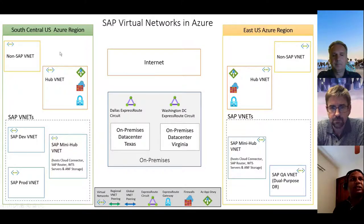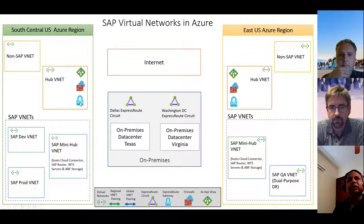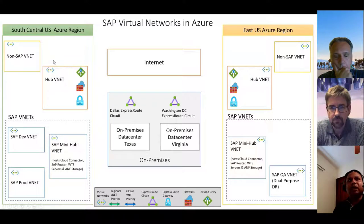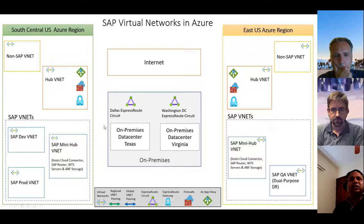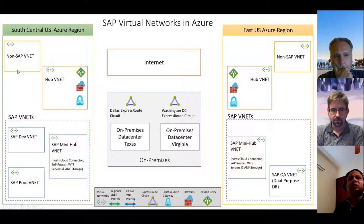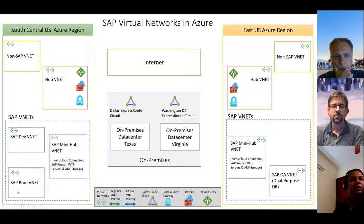Likewise, any east-west traffic within the region or cross-region also goes through the Palo Alto firewall. The ExpressRoute gateway links the customer's ExpressRoute circuits to ensure connectivity from the Azure regions into on-premises data centers. Beyond the hub VNet, there are non-SAP spoke VNets hosting non-SAP workloads, and SAP spoke VNets — environment-specific ones like dev and production — as well as a QA VNet and a mini hub VNet.